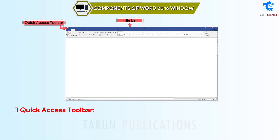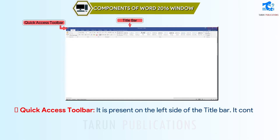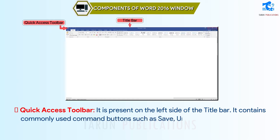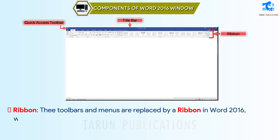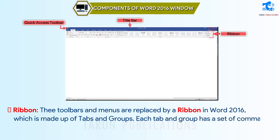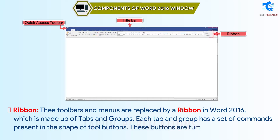Quick Access Toolbar: it is present on the left side of the title bar. It contains commonly used command buttons such as Save, Undo, or Redo. Ribbon: the toolbars and menus are replaced by a ribbon in Word 2016, which is made up of tabs and groups. Each tab and group has a set of commands present in the shape of tool buttons, which are further divided into various groups.